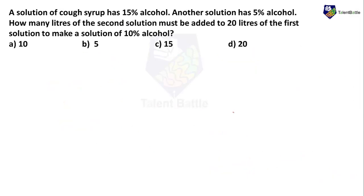A solution of cough syrup has 15% alcohol. Another solution has 5% alcohol. How many liters of the second solution must be added to 20 liters of the first solution to make a solution of 10% alcohol? This question belongs to the alligation and mixture concept. In alligation mixture, we use a simple formula whenever we want to mix two things.